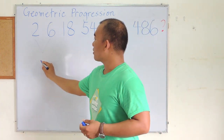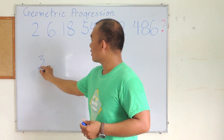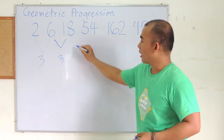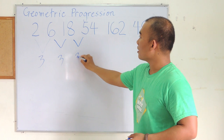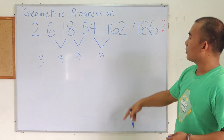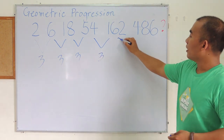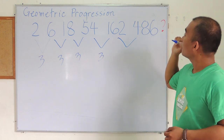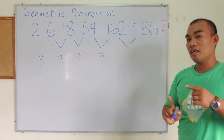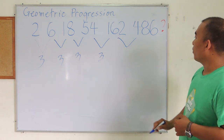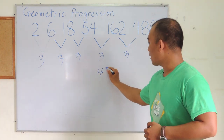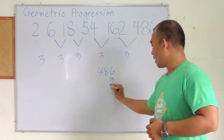So 2 times 3 equals 6. 6 times 3 equals 18. 18 times 3 equals 54. 54 times 3 is 162. 162 times 3 equals 486. To determine the next number in the series, we multiply 486 by 3.